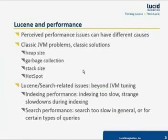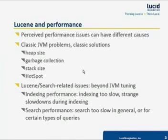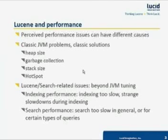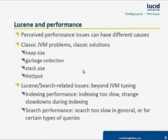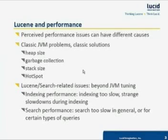On the other hand, there is a range of performance bottlenecks that are directly related to the way applications use Lucene, and these problems go beyond simple JVM tuning. We can group these problems into two groups. One group is related to indexing performance — when indexing is too slow in general, or the application experiences strange slowdowns during indexing. The other group is search performance — when search is too slow in general, or too slow only for certain types of queries.